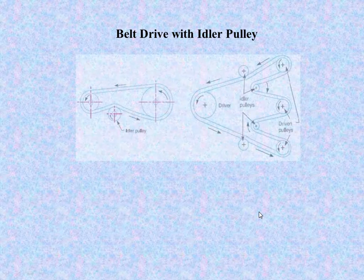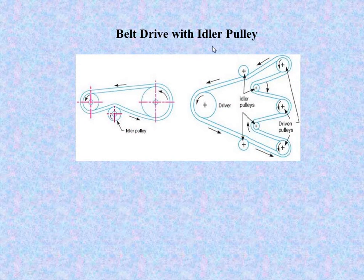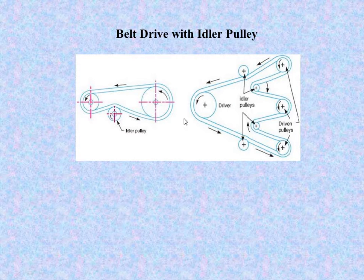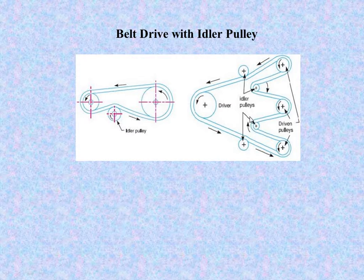Next is the belt drive with idler pulley. Here, we have to transmit motion from one shaft to another. The idler pulley is used for this purpose. This is the driver pulley. We have to transfer motion from this driver pulley to the driven pulley.